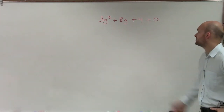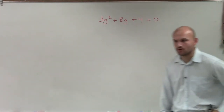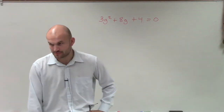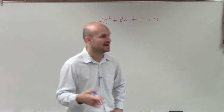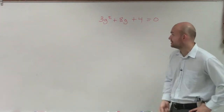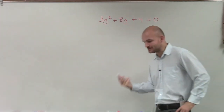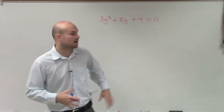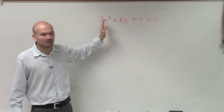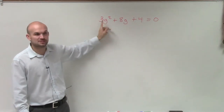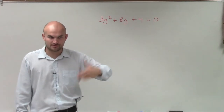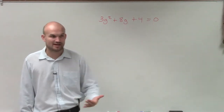So what we have here is 3g squared plus 8g plus 4. What I'm asking you to do is find the solutions to this equation. We need to find the values that make this equation true — we need to find the values of g. We can't go back to algebra 1 and just isolate the g variable because there's more than one g variable, and we can't combine them because that's a g squared and that's a g. So we have to use factoring.